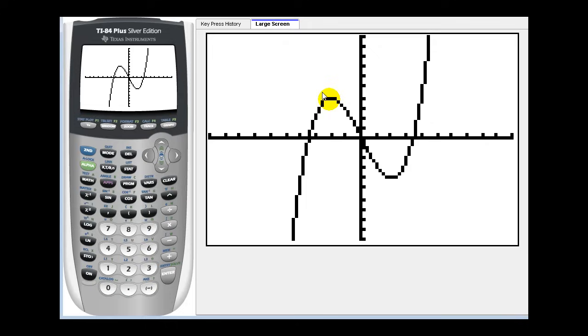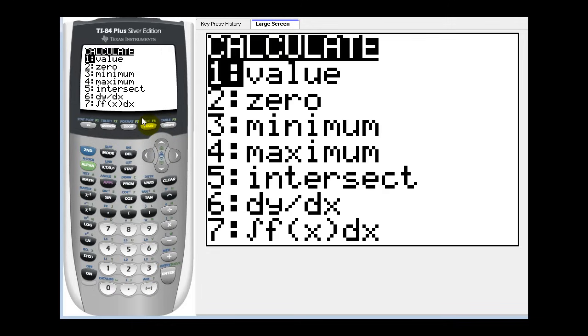To calculate the exact coordinates of this point, if we press second trace, which brings up the calculation menu, we have to decide whether we want to find the minimum or maximum first. Let's go ahead and find the minimum first, so we'll press option three.